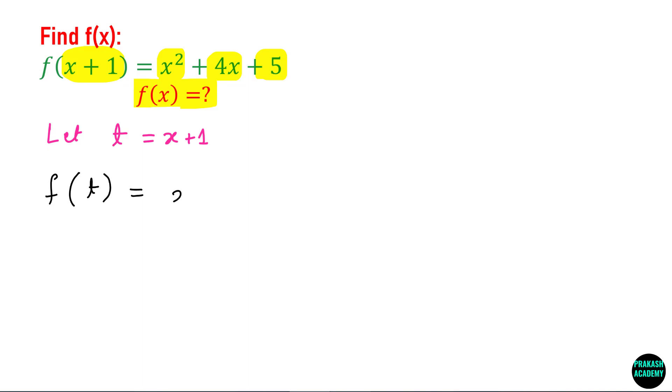And now x becomes t minus 1. So from this equation you can say x is nothing but equals to t minus 1. So now let us plug here. So this is t minus 1 whole squared plus 4 times t minus 1 plus 5.